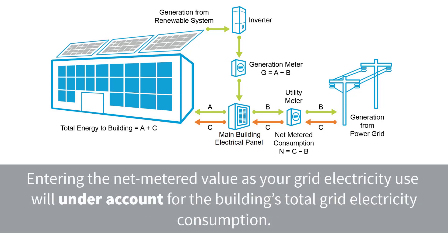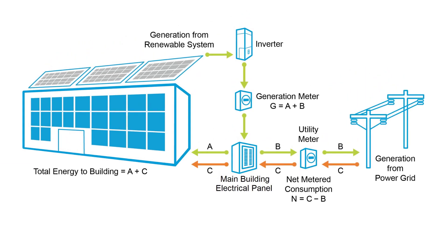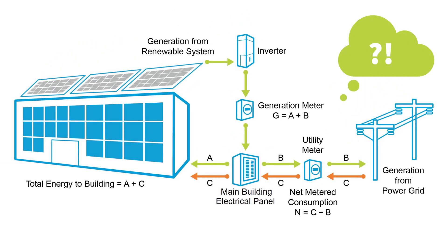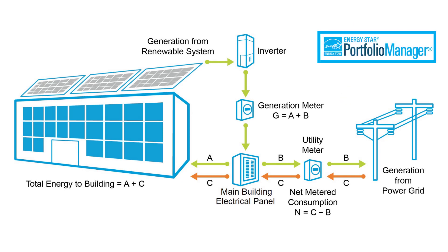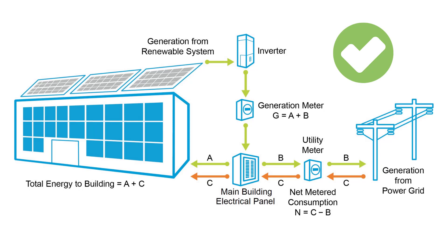Entering the net metered value as your grid electricity use will under-account for the building's total grid electricity consumption. The answer is that Portfolio Manager differentiates between the energy you consume from the grid and the energy you consume from on-site generation. Essentially, your energy metrics are getting a credit for on-site renewable electricity consumption compared to grid electricity consumption, so it's important to be able to differentiate the two.